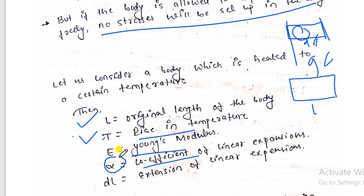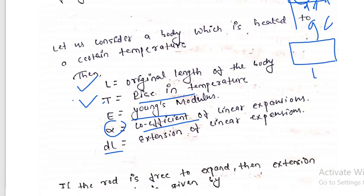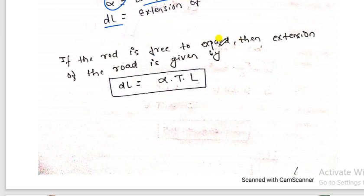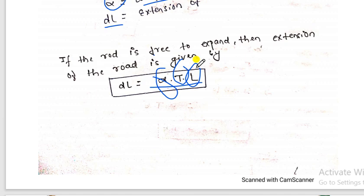Many students don't know what the coefficient of expansion means. It describes how the shape, size, and density of a body changes due to change in temperature. When the body is not rigidly fixed — free to expand or contract — there will be some change in length, represented as delta-L. The extension is given as alpha × T × L, where alpha is the coefficient of expansion, T is the change in temperature, and L is the original length.